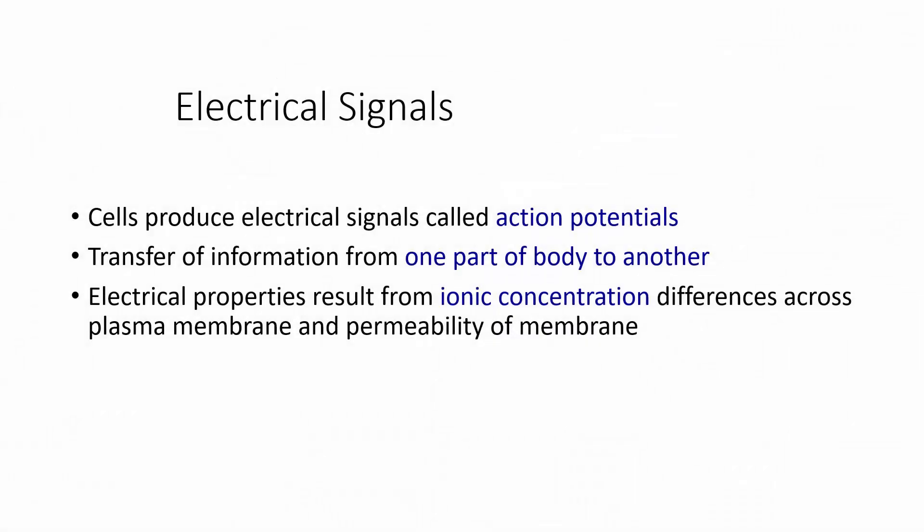Cells produce electrical signals called action potentials, and this transfers information from one part of the body to another. Electric properties result from ionic concentration differences across the plasma membrane and also the permeability of that membrane. Ions are going to have to cross from outside the cell to inside the cell, or vice versa, changing what we call the membrane potential — making it either more positive or more negative.